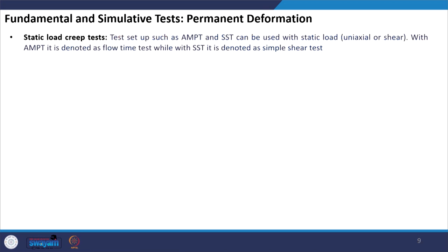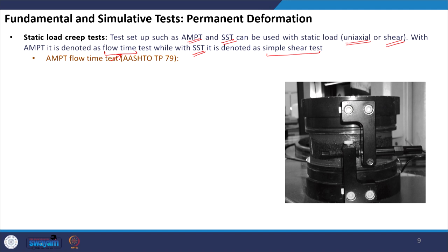We also have static load creep test. The previous slides discussed dynamic creep where we apply loading and unloading. In static creep we do not load and unload dynamically; instead we use a static load, we keep that load on the sample for a certain period of time and see how the sample responds. The same machines — AMPT and the superpave shear tester — can be operated in static mode. If using AMPT, a uniaxial static load is used; if using superpave shear tester, a shear static load is used. Using AMPT, the response is denoted in terms of flow time, while with superpave shear tester the test is called simple shear test.